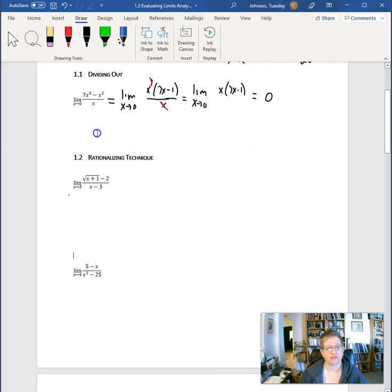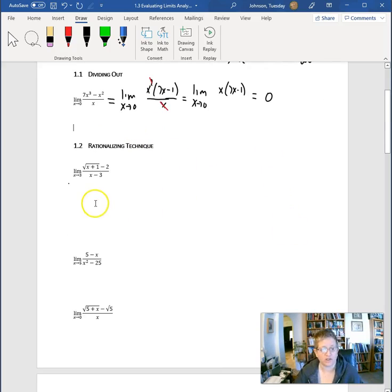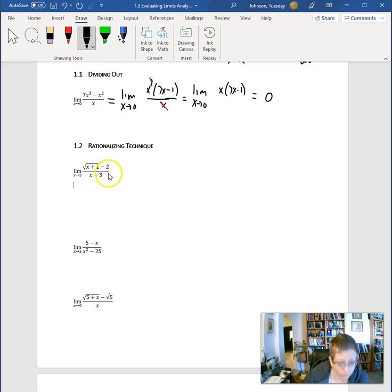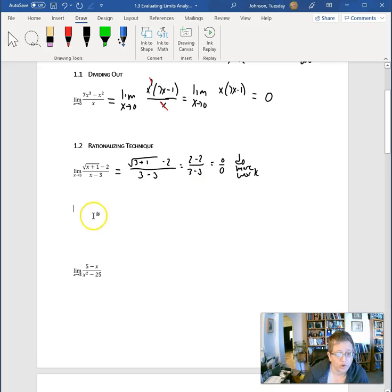Now, we're super happy if this happens. We can handle it, we can deal with it, everything's good. But what happens if we can't just factor? Here's another one. As x approaches 3, we'll put in our 3.